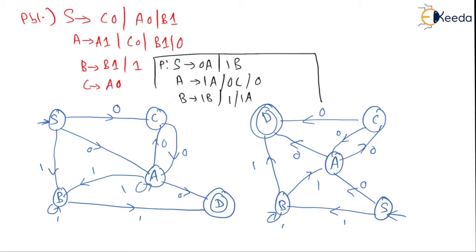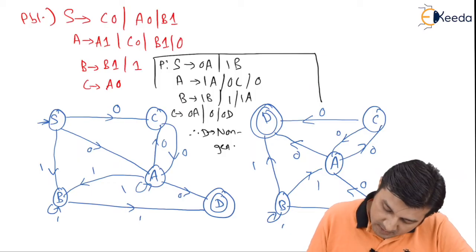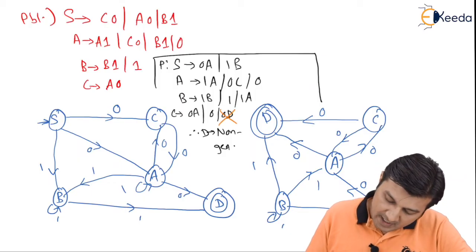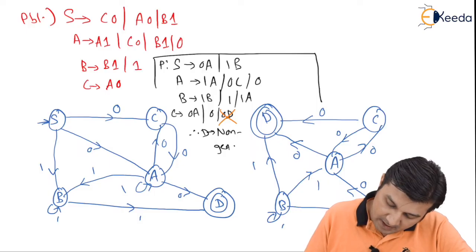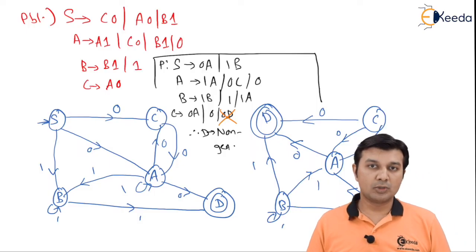Lastly for C: C on 0 goes to A, C on 0 goes to the final state, and C on 0 goes to D. We observe that D is a non-generating state, so we have to remove all productions that include D. That means this production will be removed, and the remaining productions are the solution to this problem.